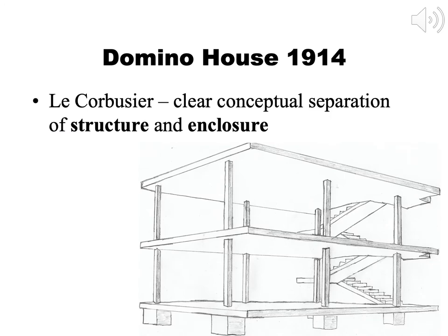Although the practice of constructing buildings had long separated enclosure and structure when convenient, the famous architect Le Corbusier in 1914 formally presented the concept that great benefits could come to designers and occupants if structure and enclosure were separated. He showed this in his original sketch of the Domino House — 1914 — which showed purely the structure and floor plate, allowing one to wrap it with a building enclosure that was entirely separate. This formally decoupled the two, though it took quite a few more years — generally well after the Second World War — before decoupling became commonplace.